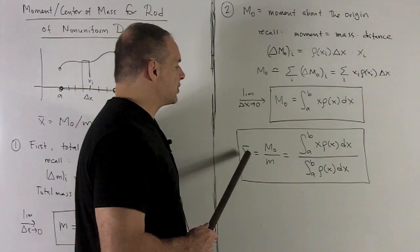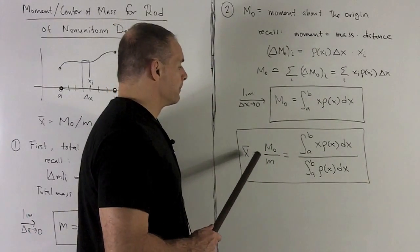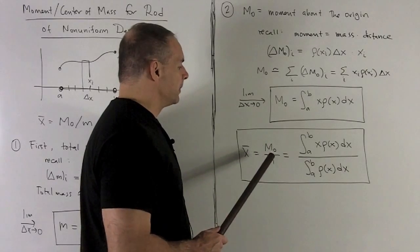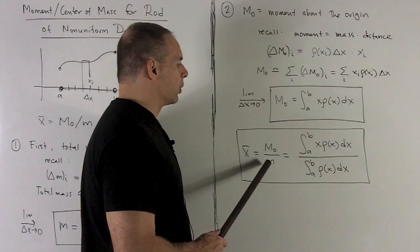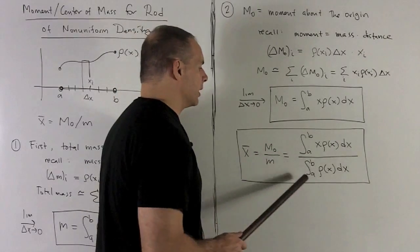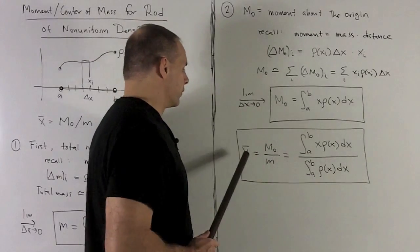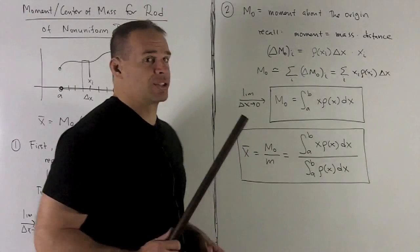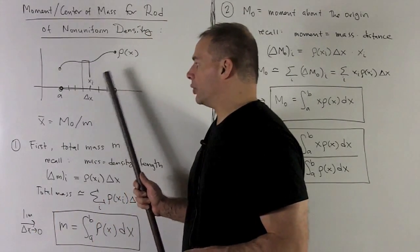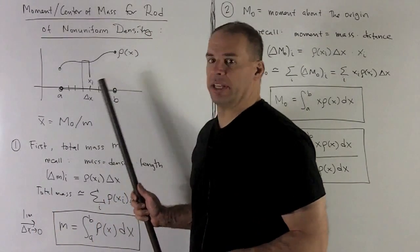The center of mass is given by taking the moment about the origin and dividing by the total mass. So we have this formula for the center of mass of a rod of non-uniform density: x̄ = M₀ / M.